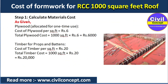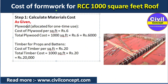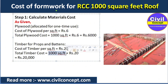In step number one we calculate the material cost — plywood and timber. For plywood, the cost is 60 rupees per square feet and the total area is 1000 square feet, so the total cost is 6000 rupees. For timber, 20 rupees per square feet multiplied by 1000 gives 20,000 rupees.